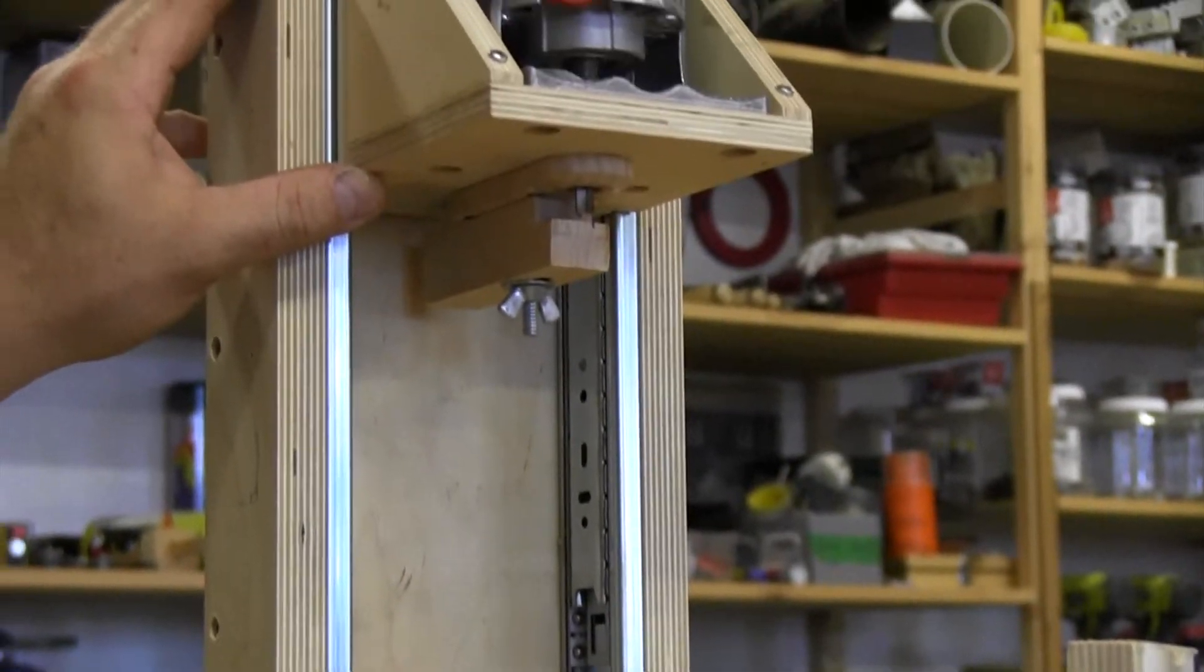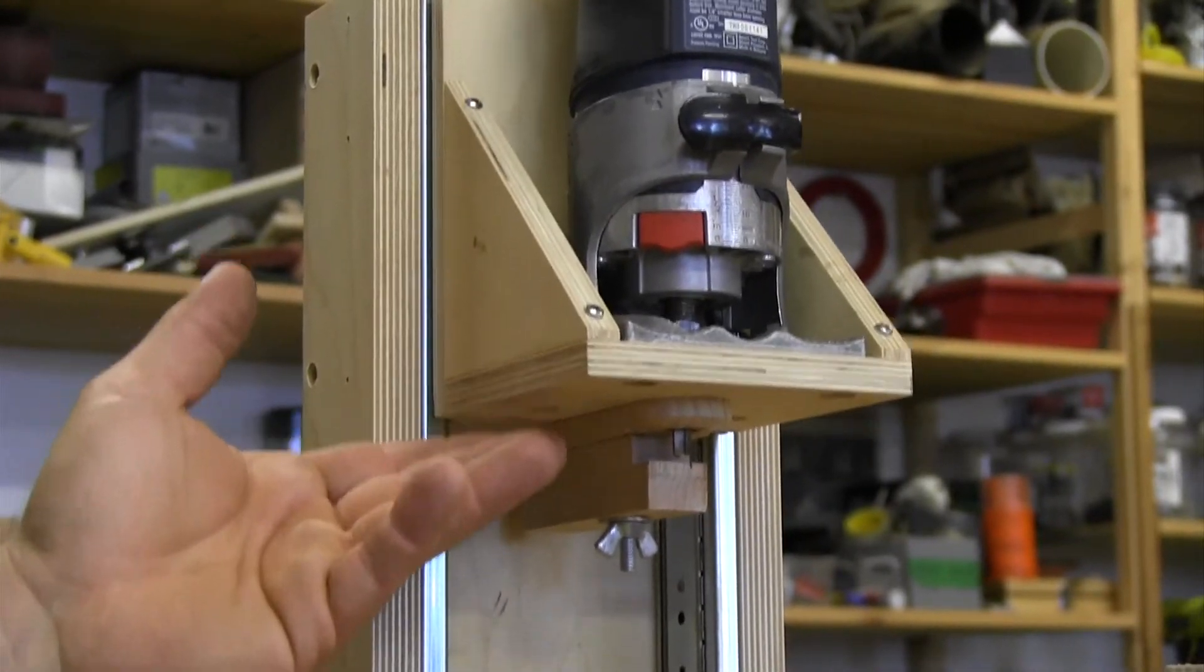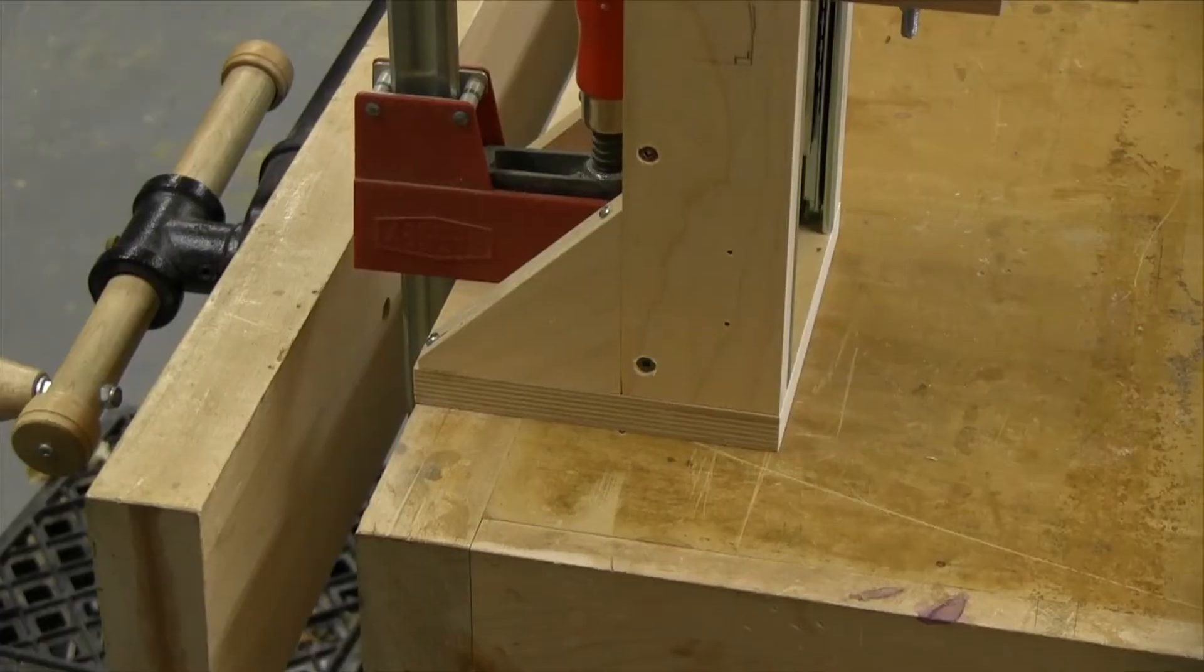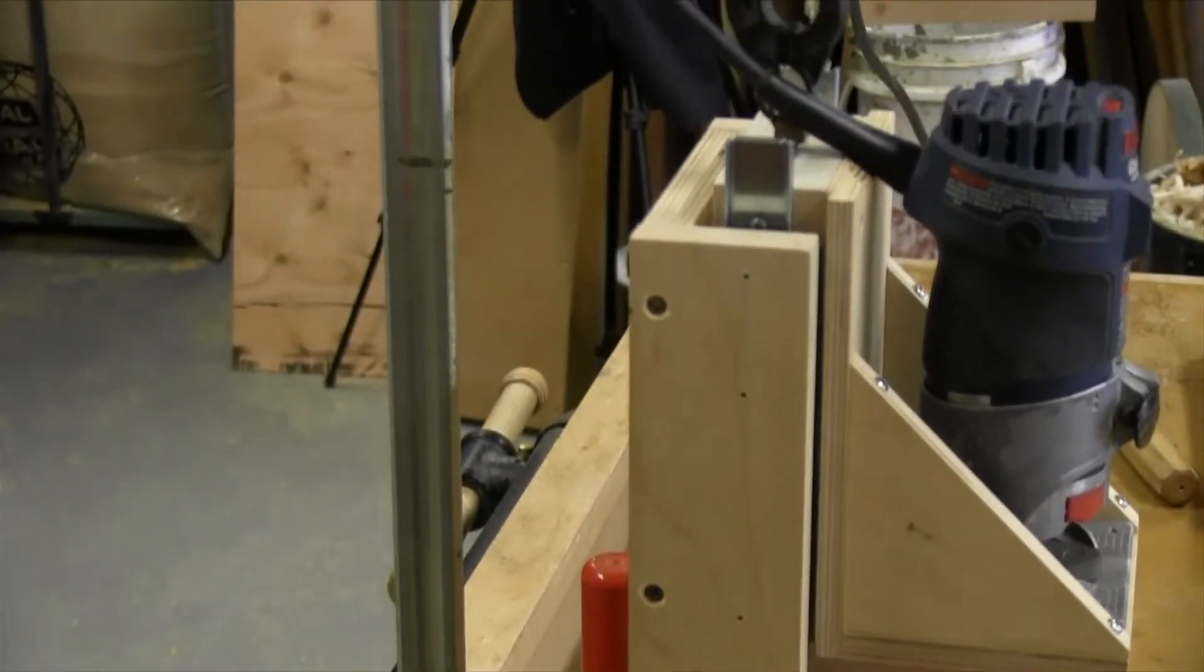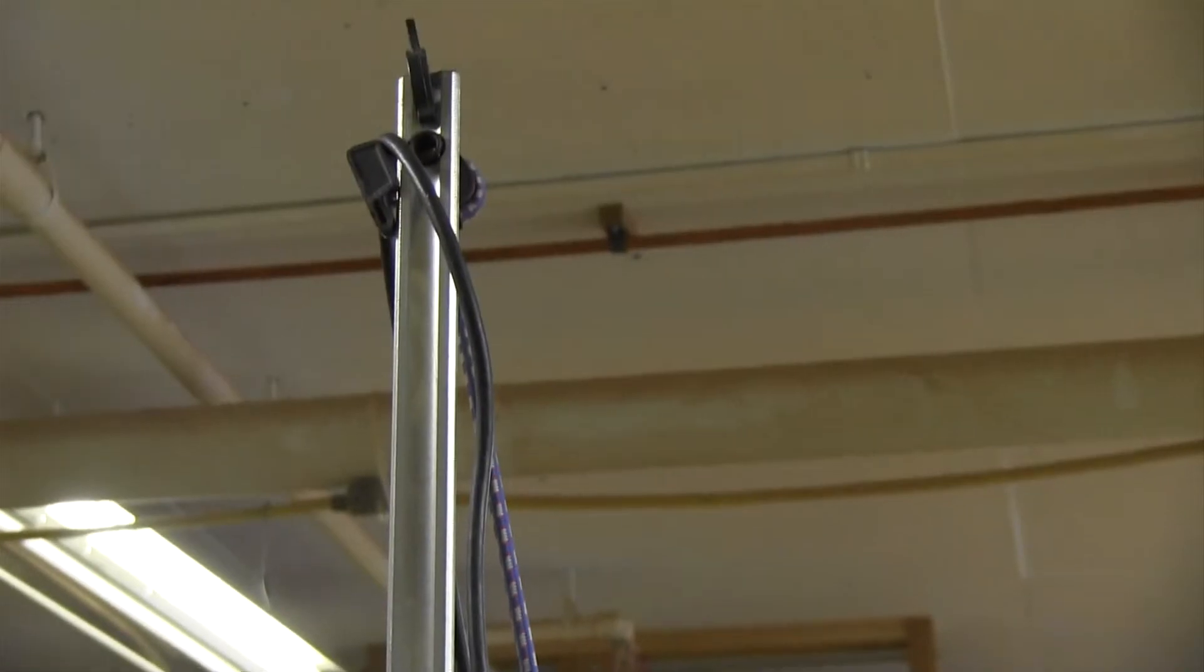Now, the important thing here is that all of the weight of the router isn't bearing down on this. To accomplish that, there's a bungee cord that links up to the top of a K-body clamp, and that's what makes it quite light.